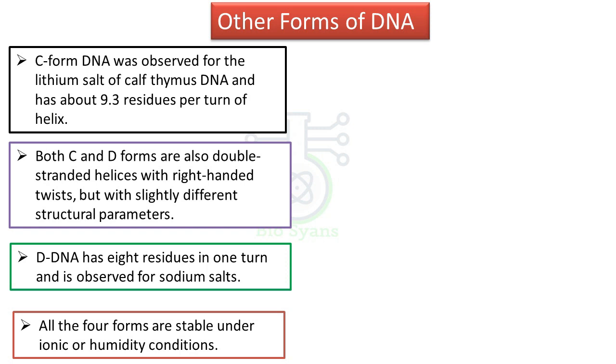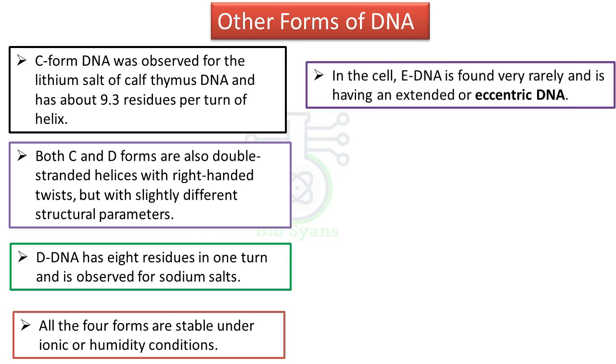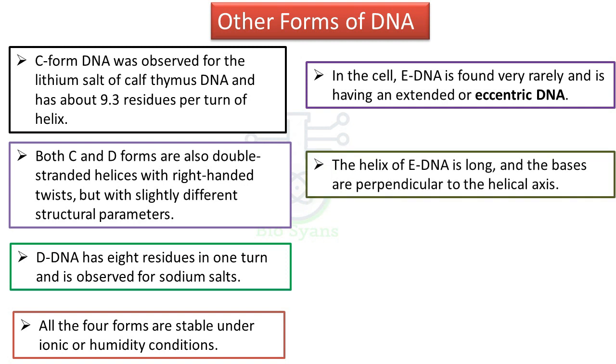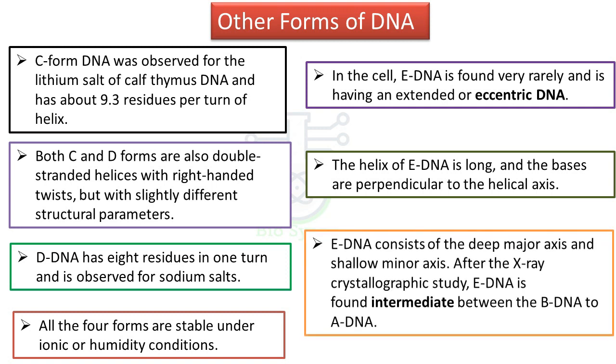E-DNA is also known as eccentric DNA, which is very rare. They have got long helical rises and the bases are perpendicular to the helix axis. They also have deep major grooves and shallow minor grooves. This E-DNA is found intermediate between B and A DNA, or B to A DNA.